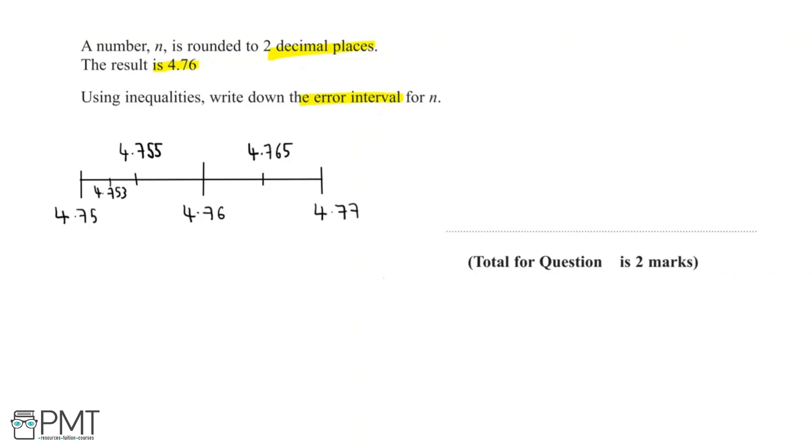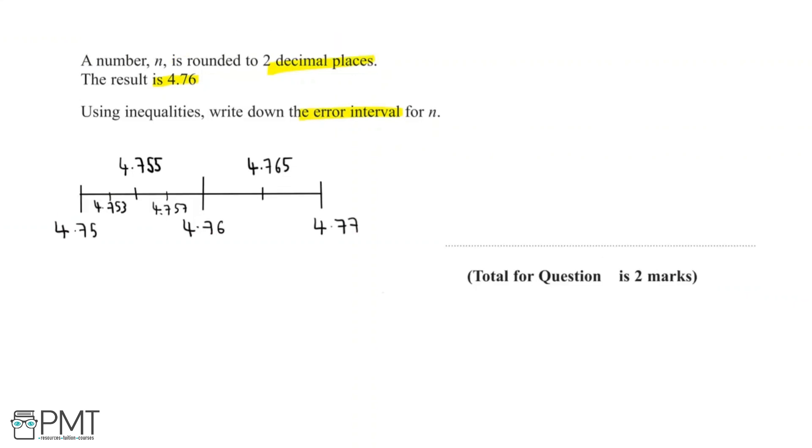So let's take a look at the numbers in between 4.755 and 4.76. Let's say 4.757. If we round that to two decimal places, that will round up to 4.76. And so we can see that any number below 4.755 will not round to two decimal places to 4.76. But 4.755 will round to two decimal places to 4.76, and so will the numbers in between that and 4.76.